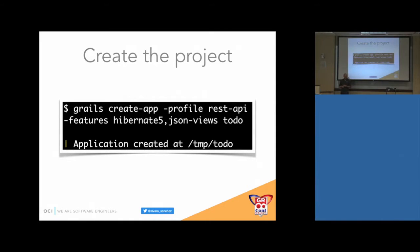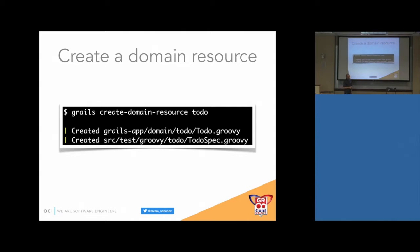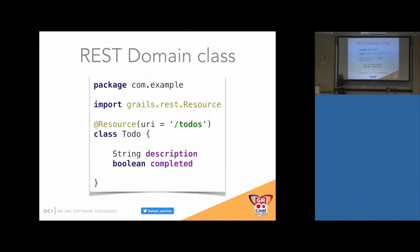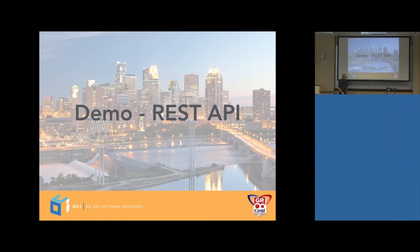To get started with the REST API profile, there is the create-app command where you specify the profile, and that's it. You can create a domain resource, and this is how the domain resource looks. The @Resource annotation is an AST transformation that at compile time will generate a controller for you automatically, and it will also set up the required URL mappings.